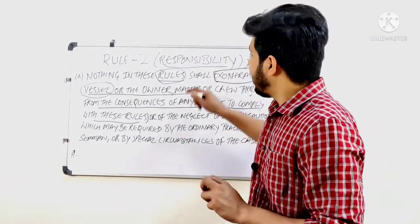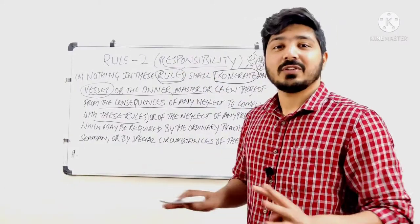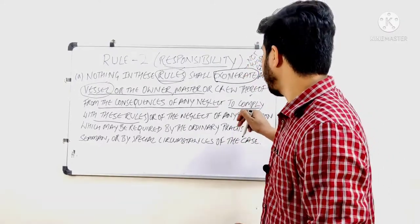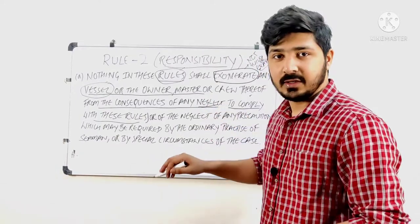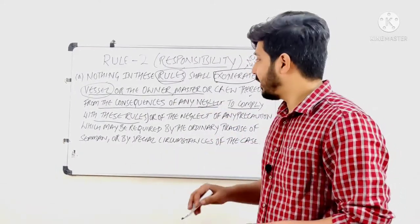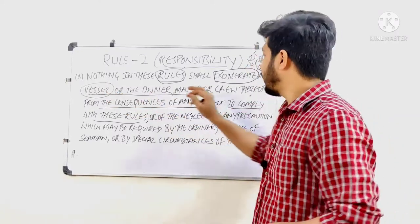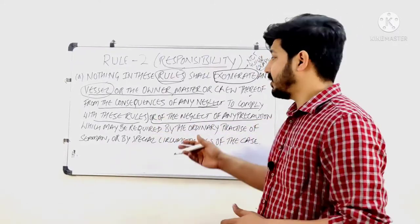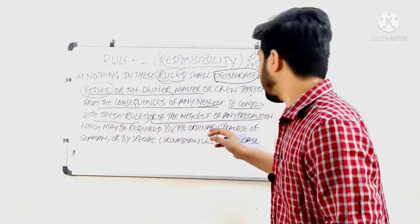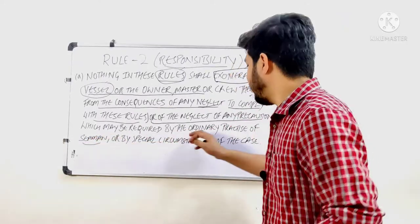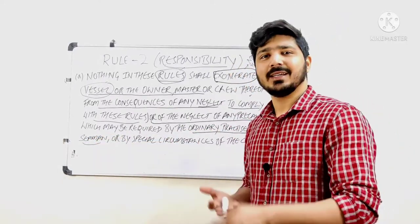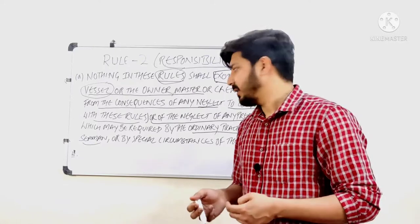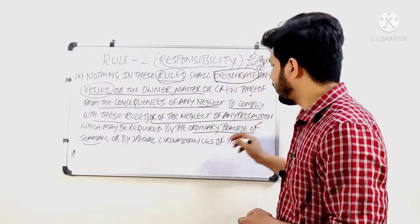You cannot use the rules to escape from the situation or find any loopholes. If you neglect any of the rules, it will be a big problem for everybody — vessel, owner, master, crew. Also, 'any neglect of any precaution which may be required by the ordinary practice of seamen' — these are common sense practices followed by seamen.